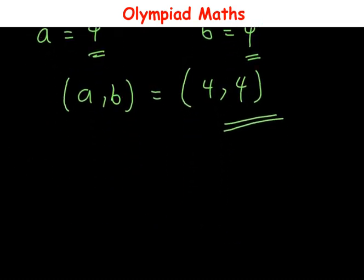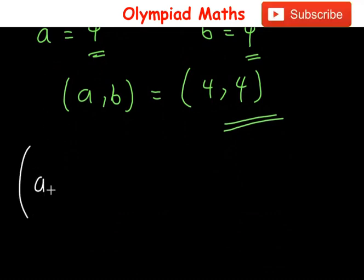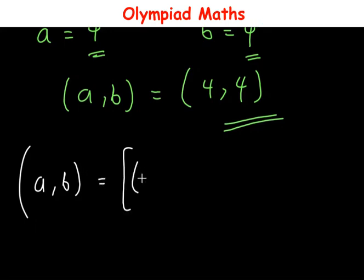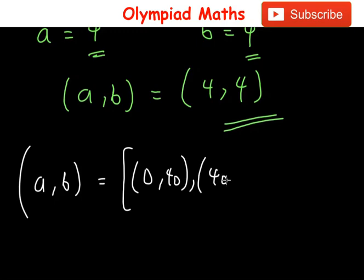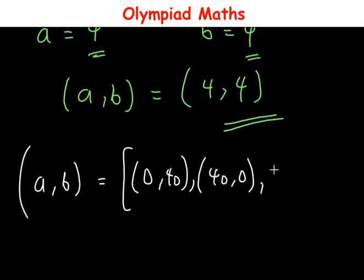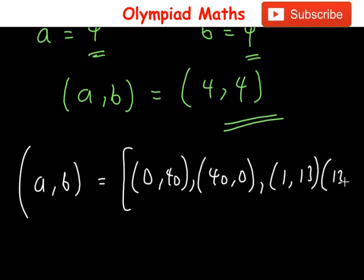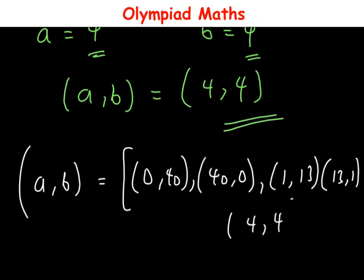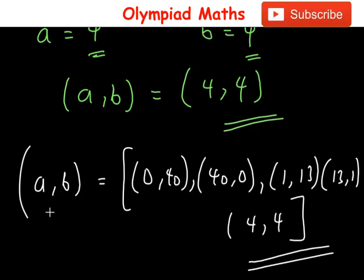Collating all the values of a and b together, we have (a, b) equal to: (0, 40), (40, 0), (1, 13), (13, 1), and (4, 4). These are all the values of a and b. I hope you all enjoyed the video. Do like the video and subscribe to this channel. Thanks for watching. God bless you.